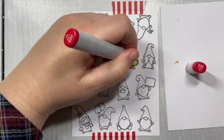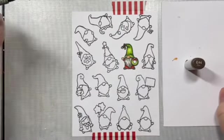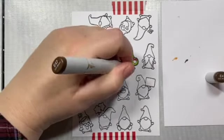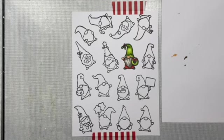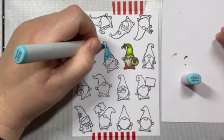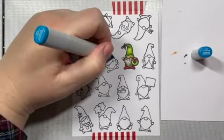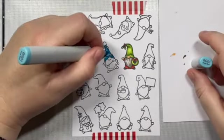For the reds, we're using R24 and R29. And then for the shoes, some E44 and E47. So, and then I colored in the center of that little wreath with some W7. Now we're going to give this little guy a blue green hat. So I'm using BG01 and BG07.